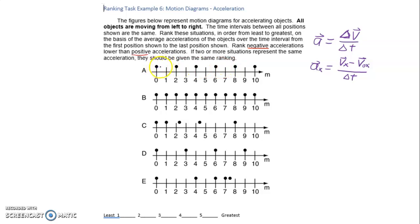In A we see that the object is moving along at a constant velocity. If the velocity is constant then we know that the acceleration is zero. In B we see that the object's moving more slowly but it's moving at a constant rate and so the acceleration is zero.